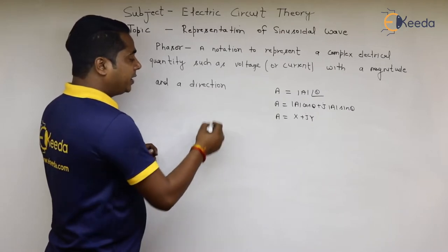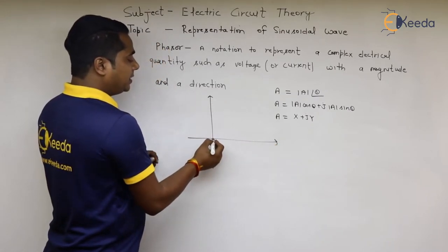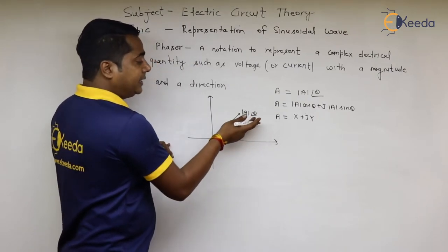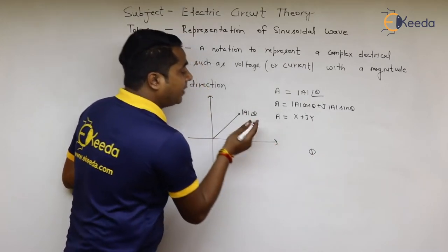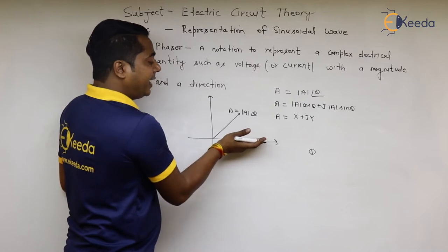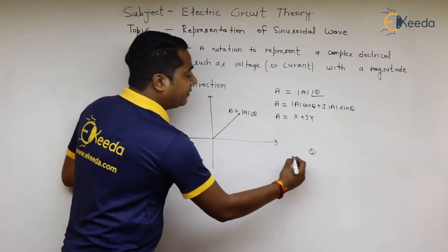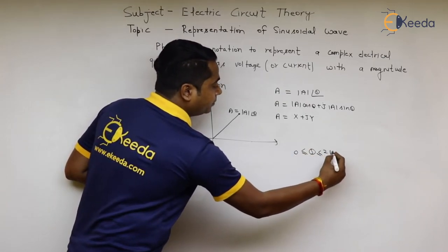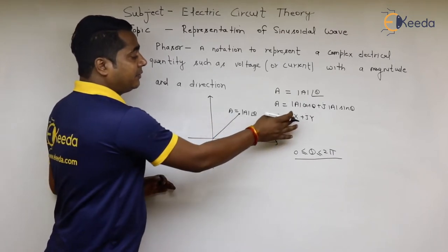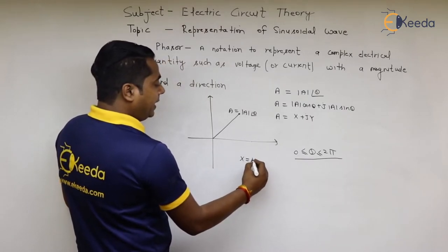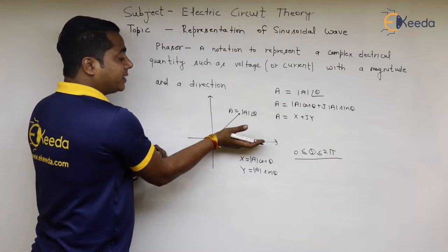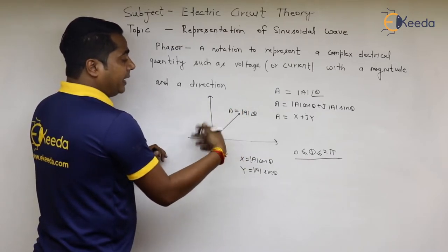If we draw the polar vector, we have this vector A at an angle of theta. As the value of theta changes — meaning as time changes — this vector A will change in position, and it can vary from 0 to 2π. If we calculate the value of x, then x = A·cos(θ) and y = A·sin(θ). As this vector rotates in terms of time, the positions of x and y will always be changing.